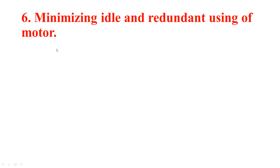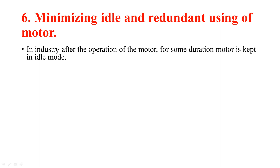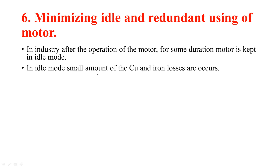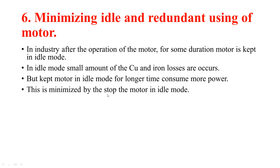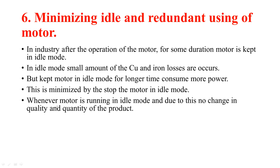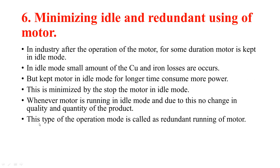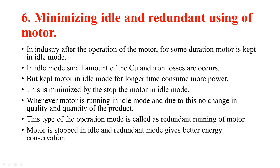Point number six is minimizing idle and redundant operation of the motor. In industry, after the operation of motor, for some duration the motor is kept in idle mode. In idle mode, a small amount of copper and iron losses occur. But keeping the motor in idle mode for a longer time consumes more power. This is minimized by stopping the motor in idle mode whenever there is no change in quality and quantity of the product. This type of operation is called redundant running of the motor. Stopping the motor in idle and redundant mode gives better energy conservation.